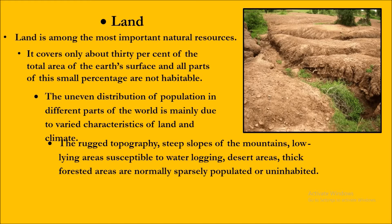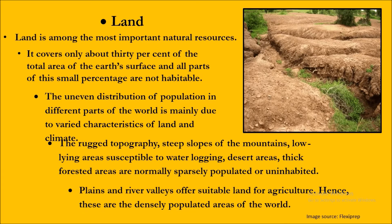People would love to stay in places like plains and river valley regions, which are suitable for agriculture. Hence, these are the densely populated areas of the world. Basing on the land characteristics, we can understand how population is distributed. The uneven distribution of population is mainly due to the varied characteristics of land and climate, and the most densely populated regions are plains and river valleys.